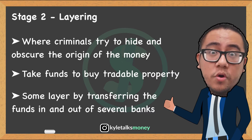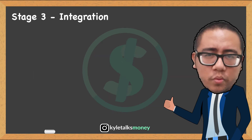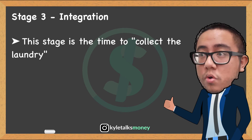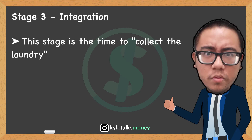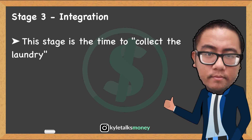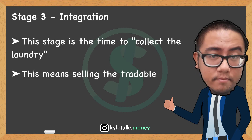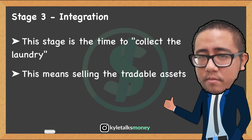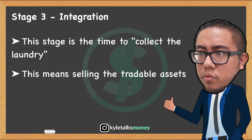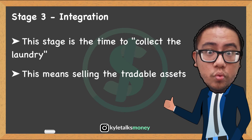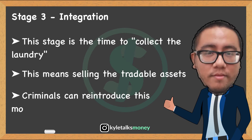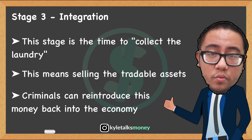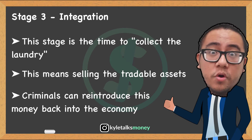And then there's integration. The integration stage is the time to collect the laundry. This last step is to return the money to the original criminal or his associates so they can spend the clean cash. This might mean selling the tradable property purchased in the layering stage, or if the criminal invested in a business, it might mean a steady stream of income in the form of profits or a generous salary. The criminal can then reintroduce this money back into the mainstream economy and spend the clean cash without anyone asking questions.